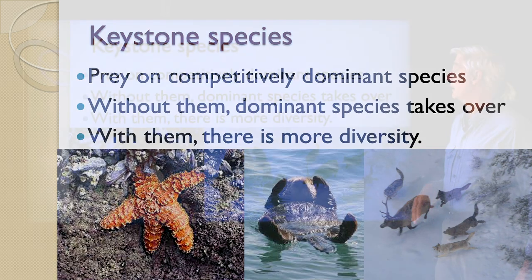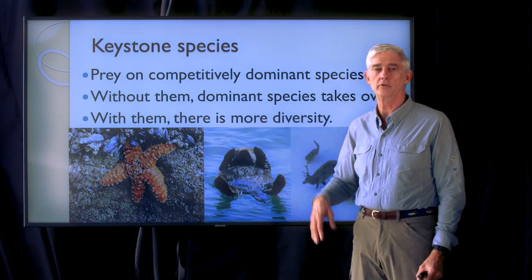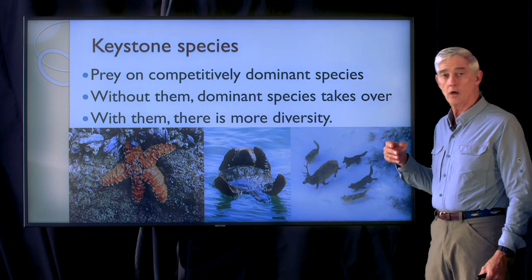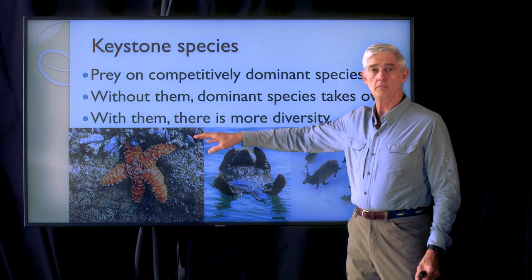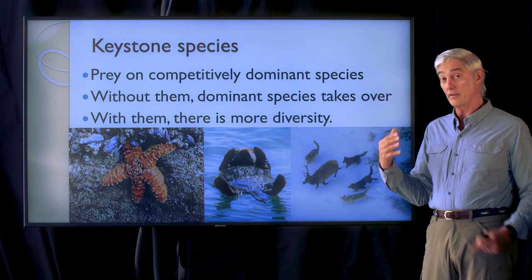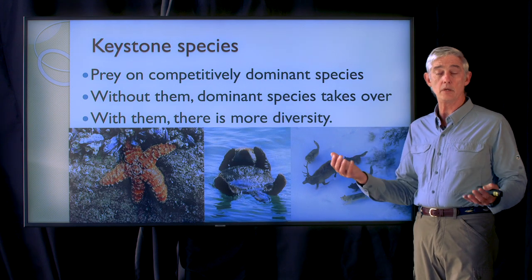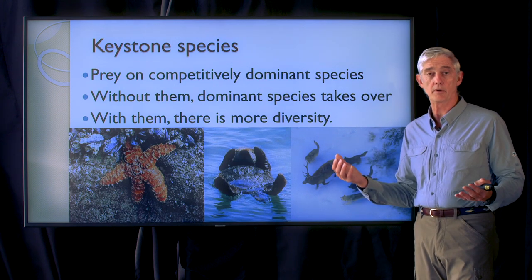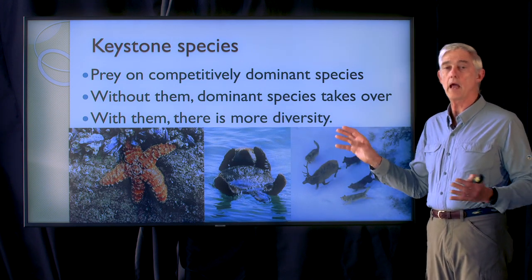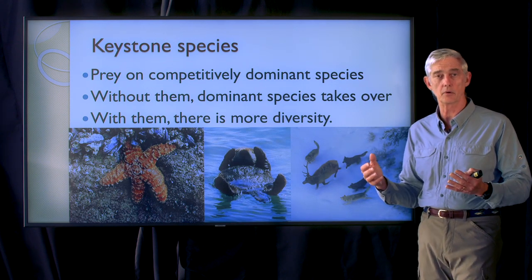The first one that was identified is the starfish Pisaster ochraceus on the coasts of Washington state, where it eats California mussels, Mytilus californianus. Without being held in check by its predator, that mussel is a competitively dominant grower — it grows all up and down the coastal rocks, out-competing other animals and plants that might be able to grow there.